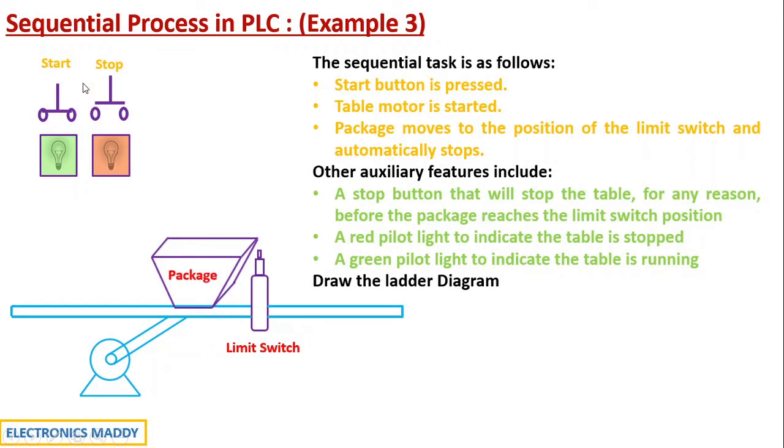So we need to have a stop push button as well. A red light to indicate the table is stopped and a green light to indicate that the table is running. So we have to draw the ladder diagram for this process.